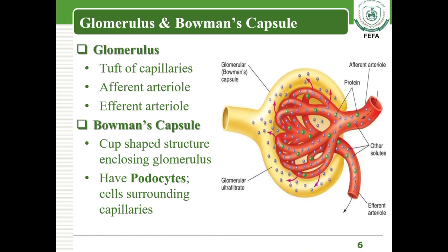The glomerulus is basically a tuft or group of capillaries. The afferent arteriole enters the glomerulus with a larger diameter, while the efferent arteriole leaves the glomerulus with a smaller diameter. This difference in diameter creates pressure within the glomerulus, causing various materials — drugs, toxic material, nitrogenous waste, and excess material — to be removed and enter into the Bowman's capsule.